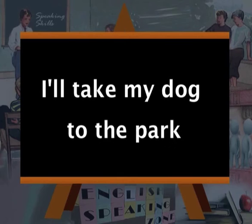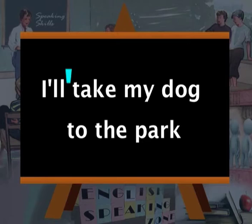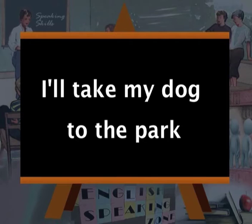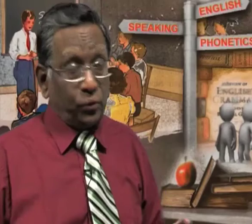Now let's take another example. Suppose we have a sentence like 'I'll take my dog to the park.' The normal way of saying this — if you watch very carefully — the stresses are on 'take,' 'dog,' and 'park.' What has happened is the other words like 'I'll,' 'my,' 'to,' and 'the' are weakened. They are not said in their full form but they are weakened, so we say 'I'll,' 'my,' 'to,' 'the' — the stresses are on the main verb and the nouns.